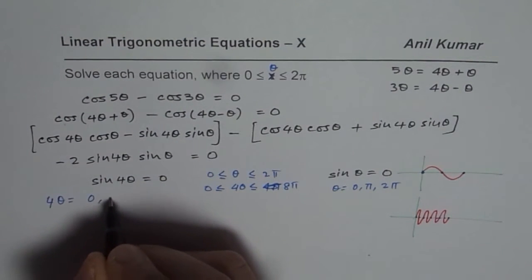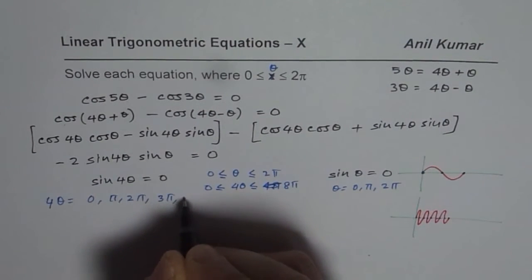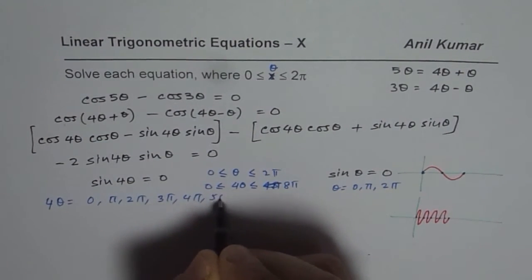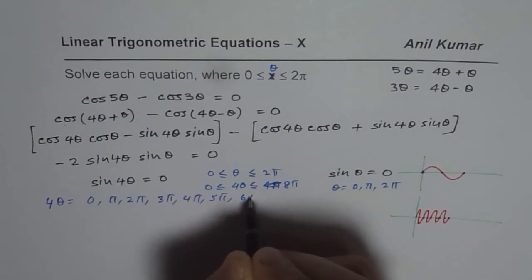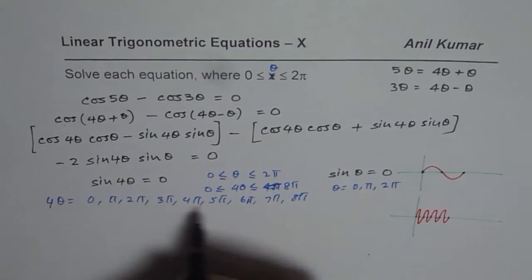So 4θ will be 0, π, 2π, 3π, 4π, 5π, 6π, 7π, and 8π.